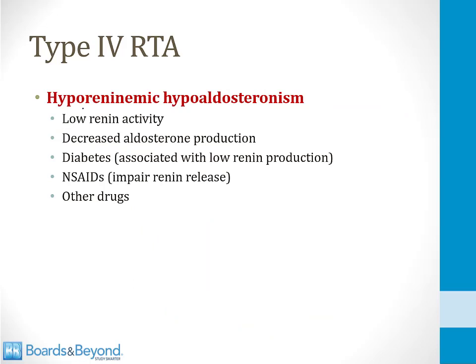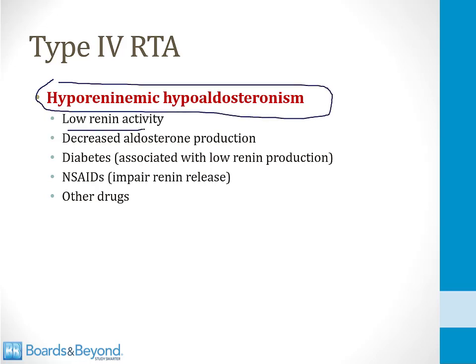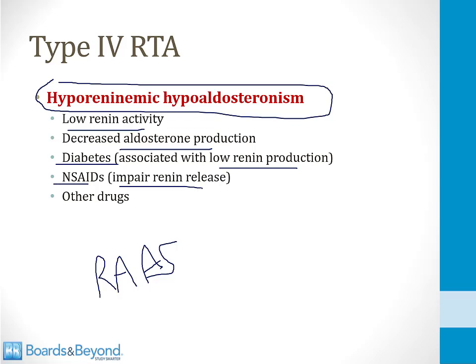Patients with hypoaldosteronism develop a type 4 RTA. The most common reason is what's known as hyporeninemic hypoaldosteronism — there is low renin activity, and that secondarily causes decreased aldosterone production. Remember that renin and aldosterone are part of the RAS, the renin-angiotensin-aldosterone system. Some of the common reasons this happens are: first, diabetes — super high yield to know this. Patients who have diabetes develop low renin production, and this can lead to a type 4 RTA. In a board question, this will be a diabetic who comes in with elevated potassium, low bicarb, and low urine pH. NSAIDs are also known to impair renin release, so patients taking lots of NSAIDs can develop a type 4 RTA.